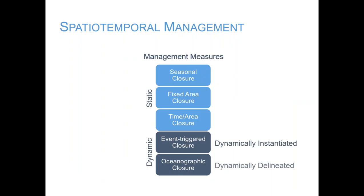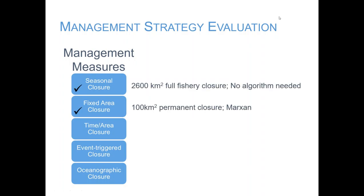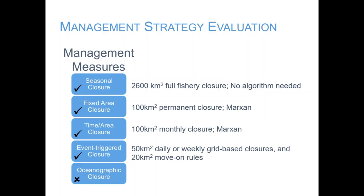There are two types of dynamic management we want to look at: dynamically instantiated measures triggered by an event, like move-on rules, and oceanographic closures. We did a management strategy evaluation using the Northeast multi-species fishery — the cod fishery off New England — looking across these different types of closures: seasonal closures, fixed area closures, time area closures, and event-triggered closures. Unfortunately, we were not able to consider oceanographic closures because the models for bottom temperature didn't have high enough resolution for this type of high-resolution management. We expect that in the next couple of years we will be able to include that.